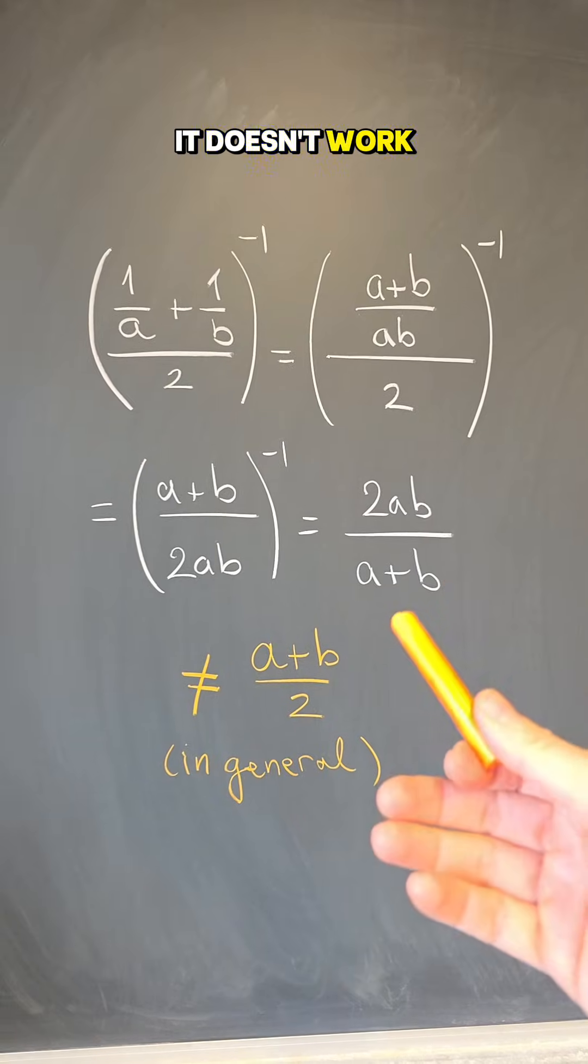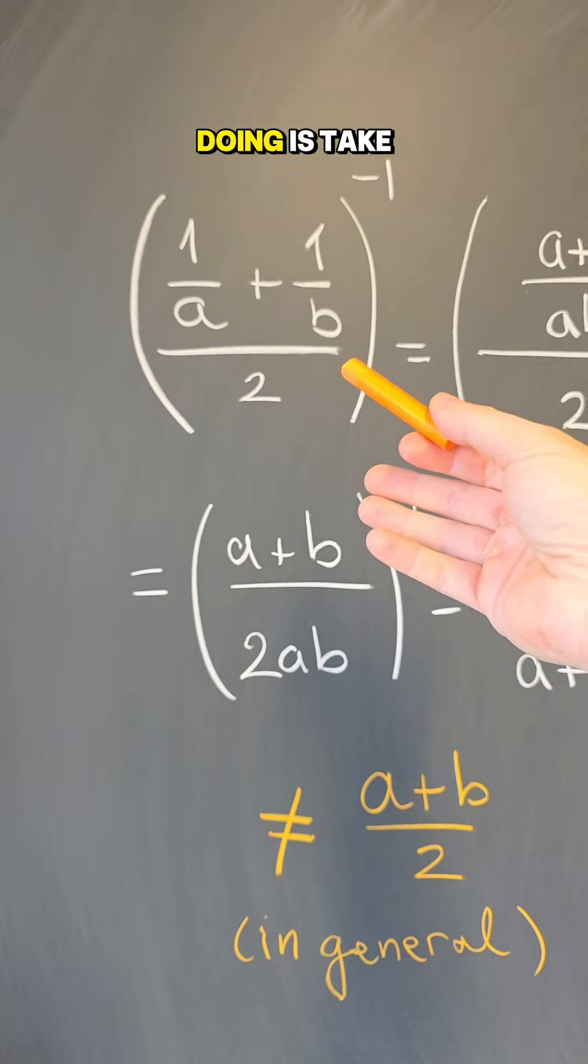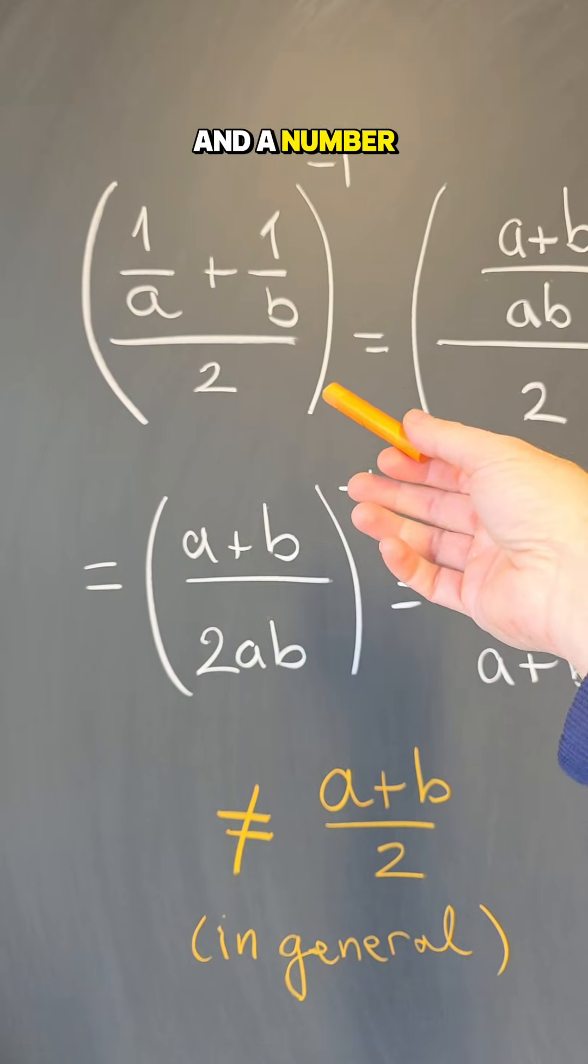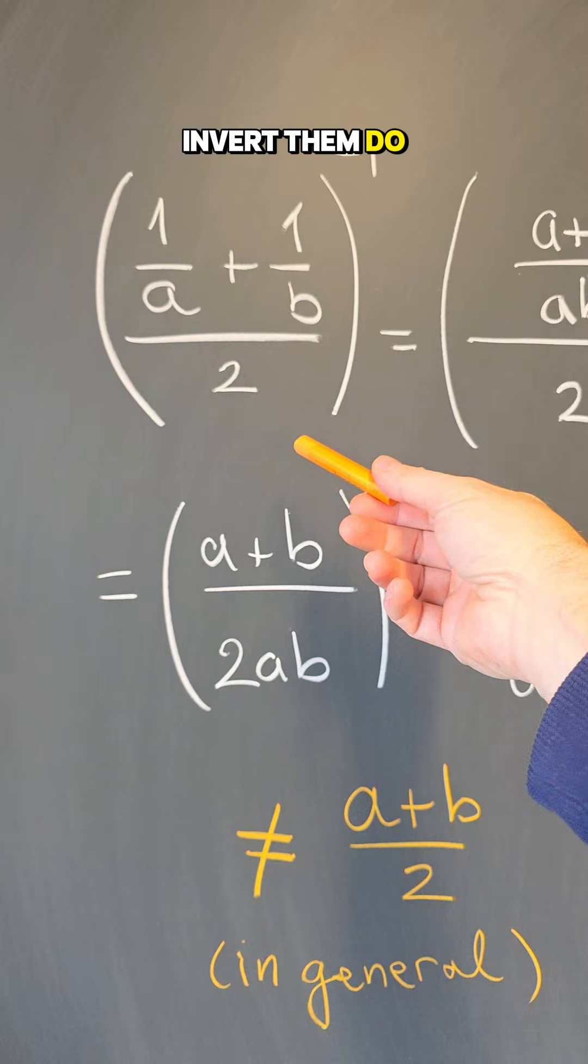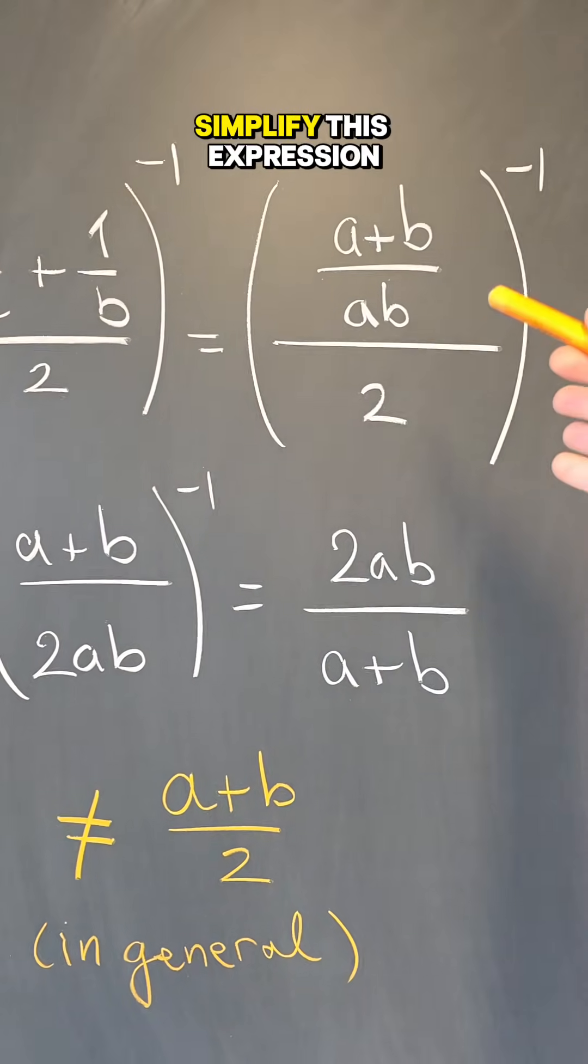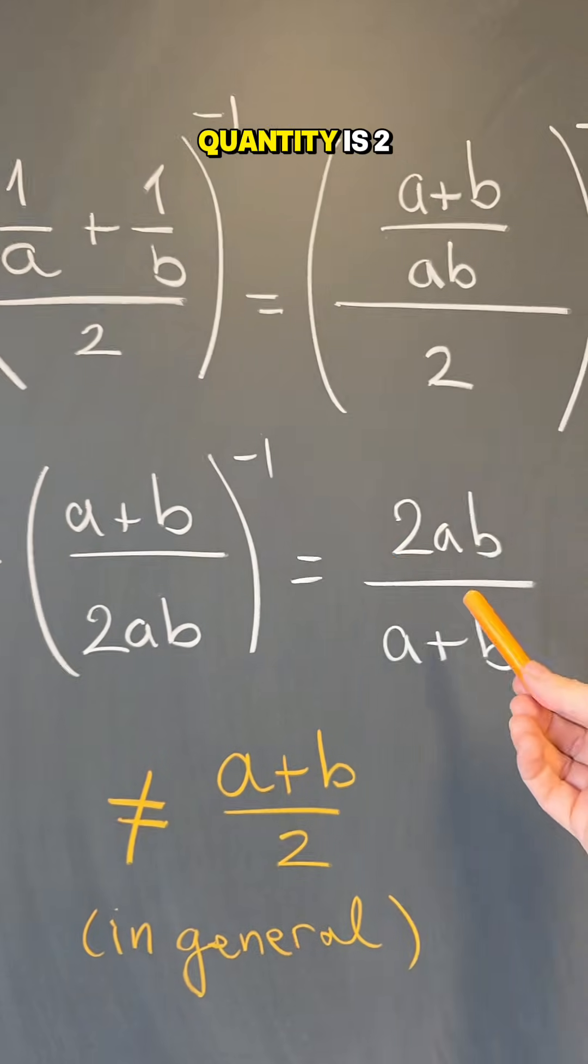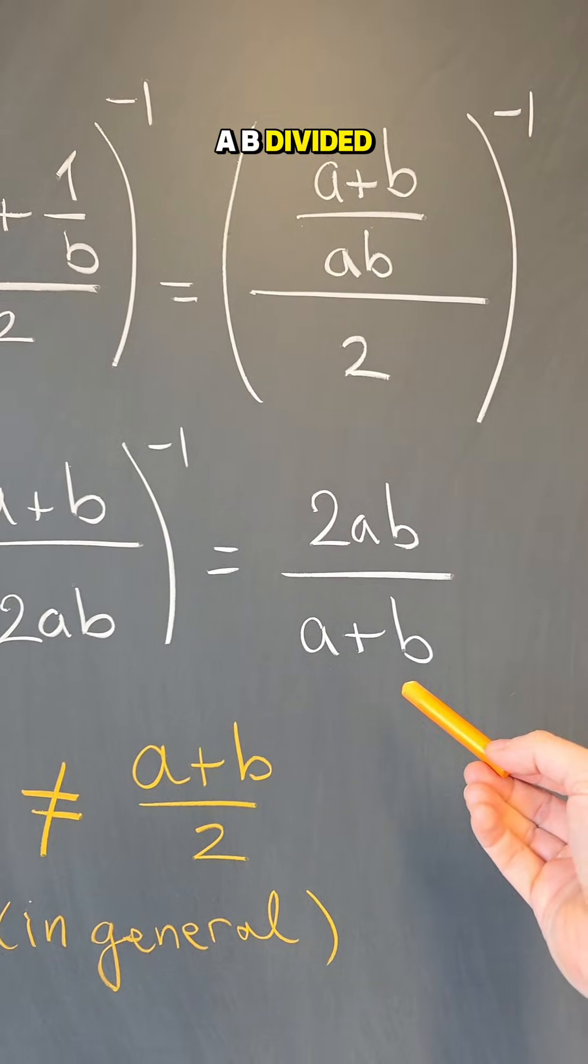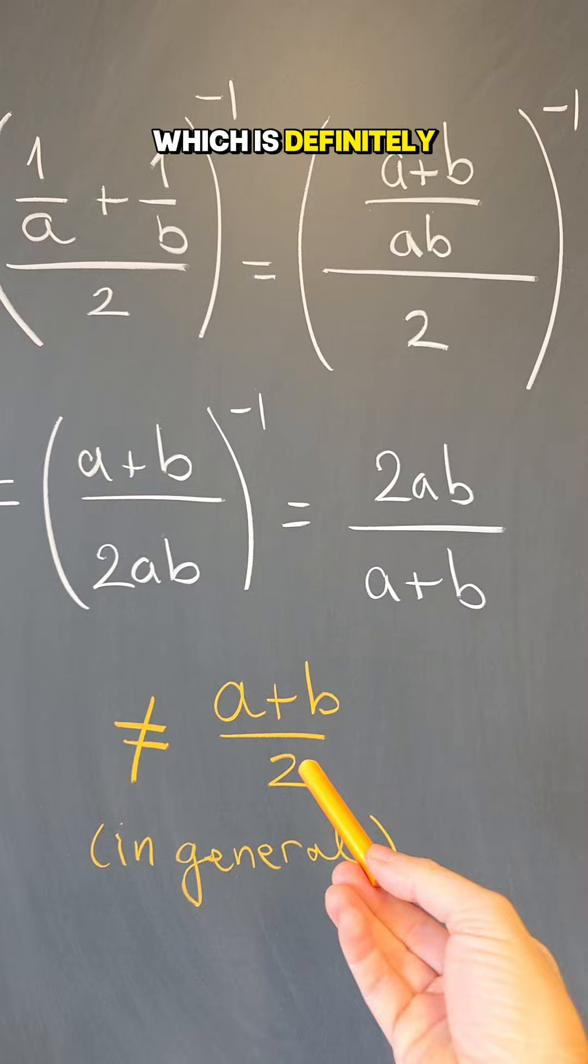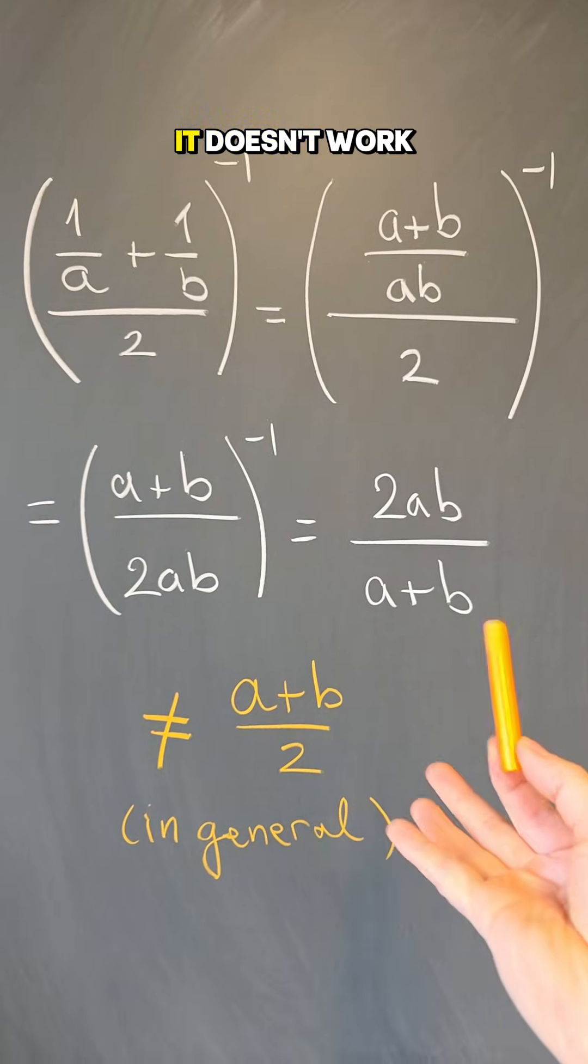First, let me show you that it doesn't work in general algebraically. So here what you're doing is take a number A and a number B, invert them, do the average, and then invert again. If you simplify this expression, what you get is that that quantity is 2AB divided by A plus B, which is definitely not A plus B divided by 2 in general, so it doesn't work.